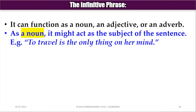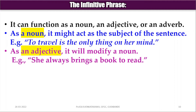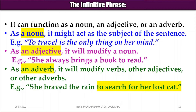As a noun, it might act as the subject of the sentence. For example: 'To travel is the only thing on her mind.' As an adjective, it will modify a noun. For example: 'She always brings a book to read.' As an adverb, it will modify other adjectives or other adverbs. For example: 'She braved the rain to search for her lost cat.'